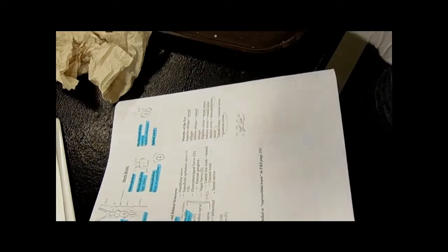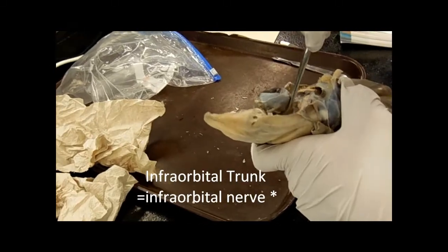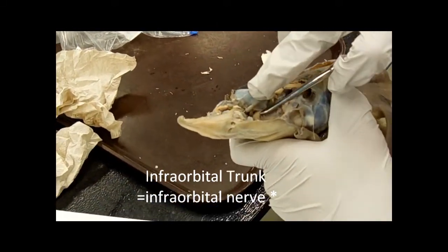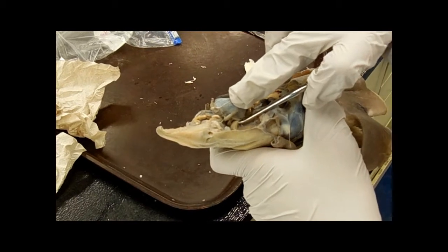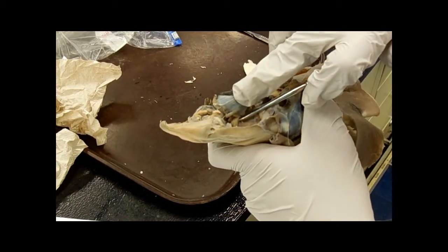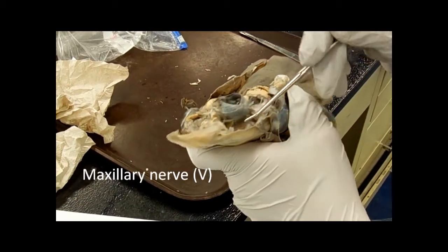And then the last two nerves that you have to know. You can see that really big chunk of nerve right there, this one. This is the infraorbital trunk, or the infraorbital nerve, and it branches off into two sections.